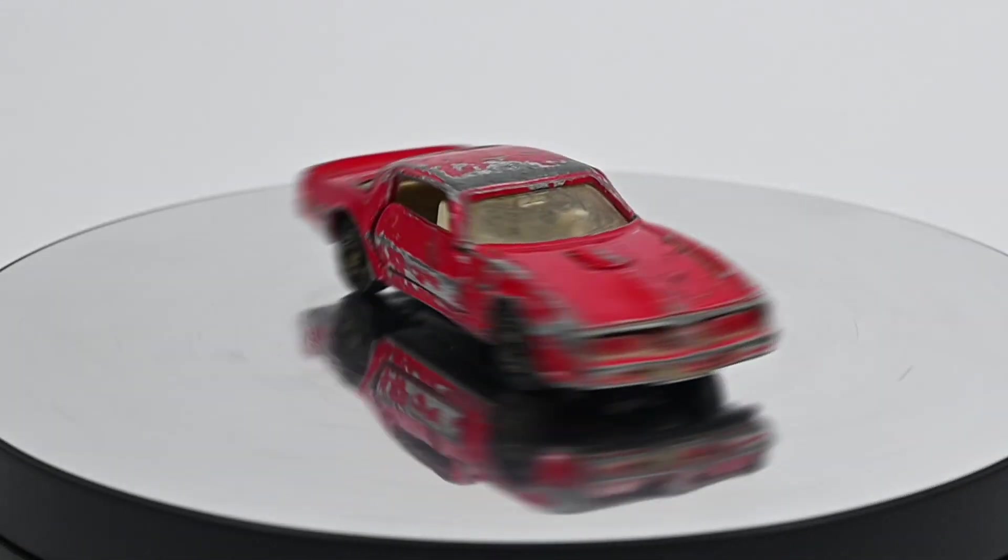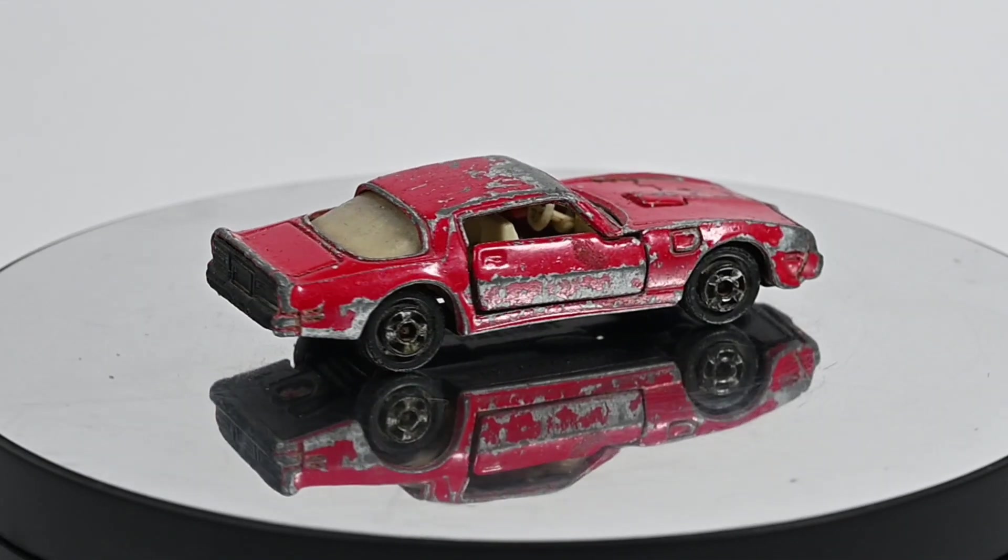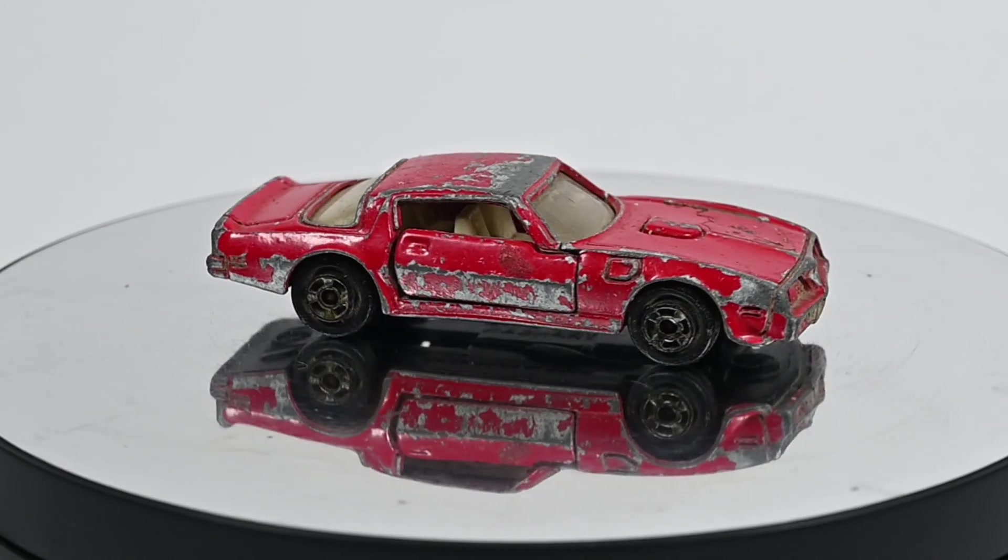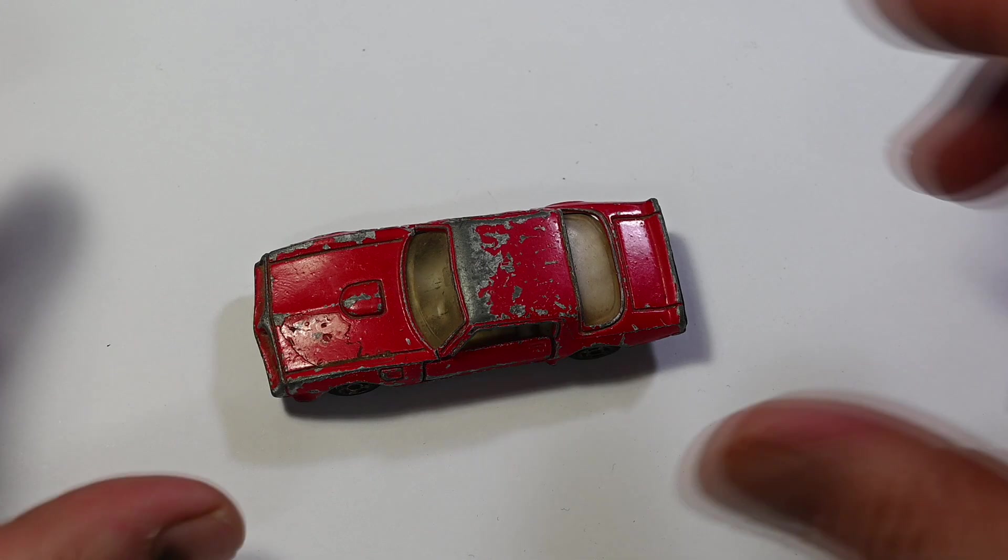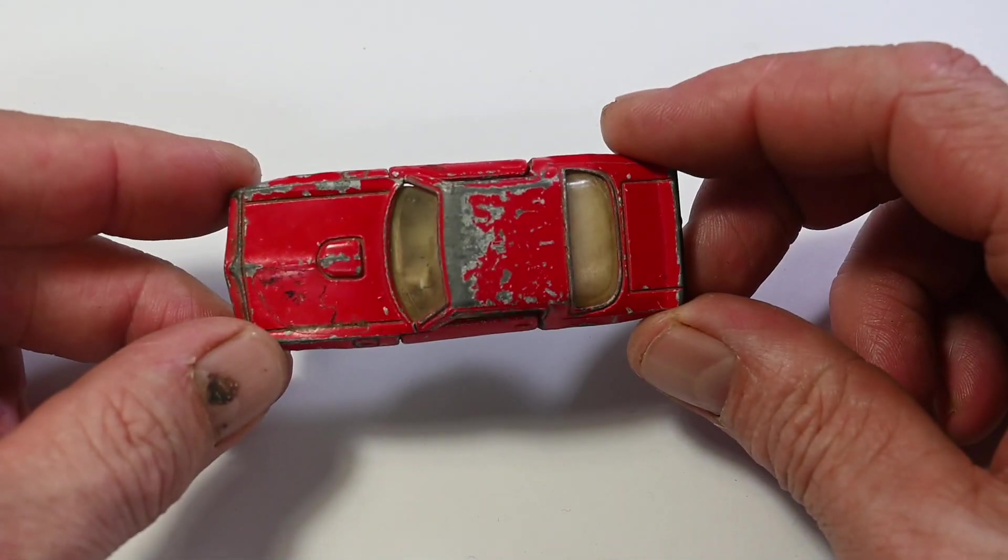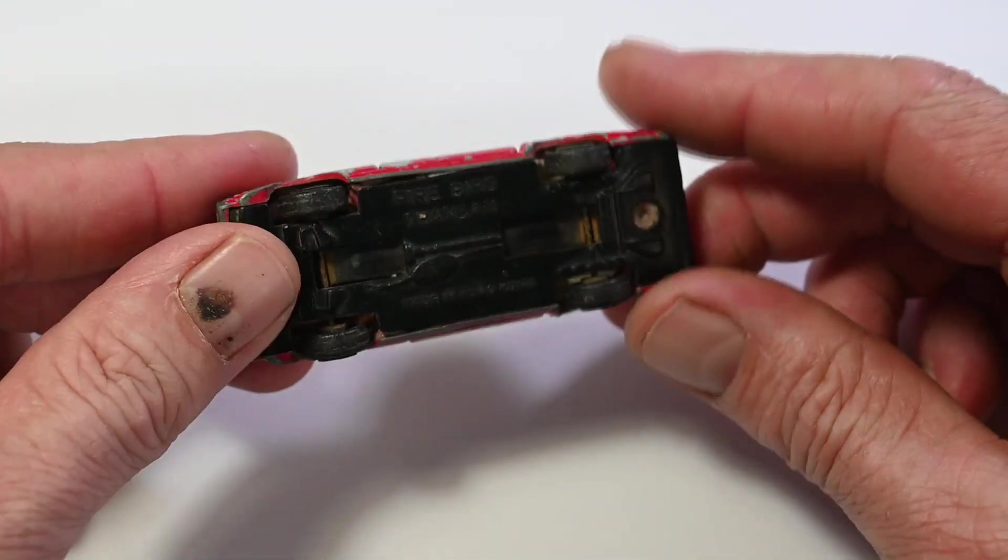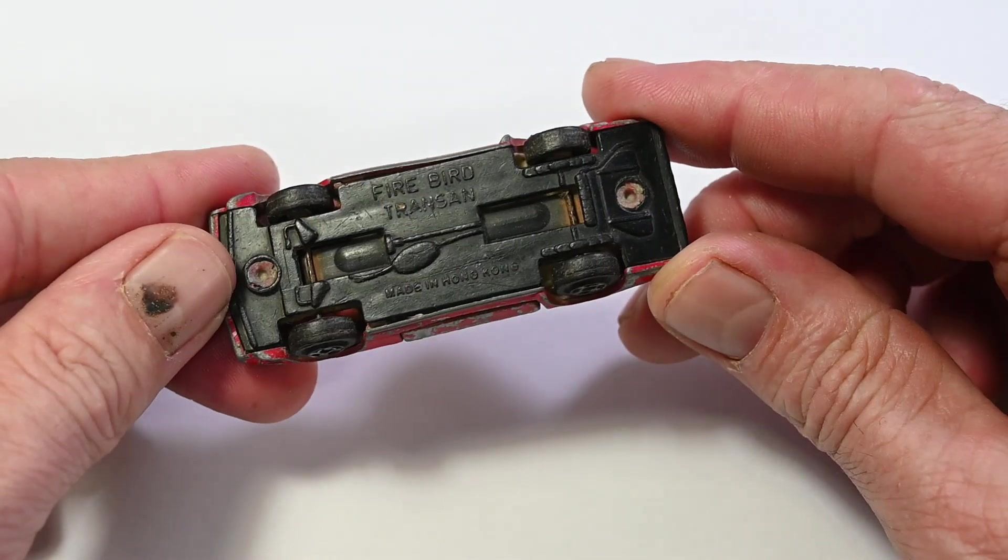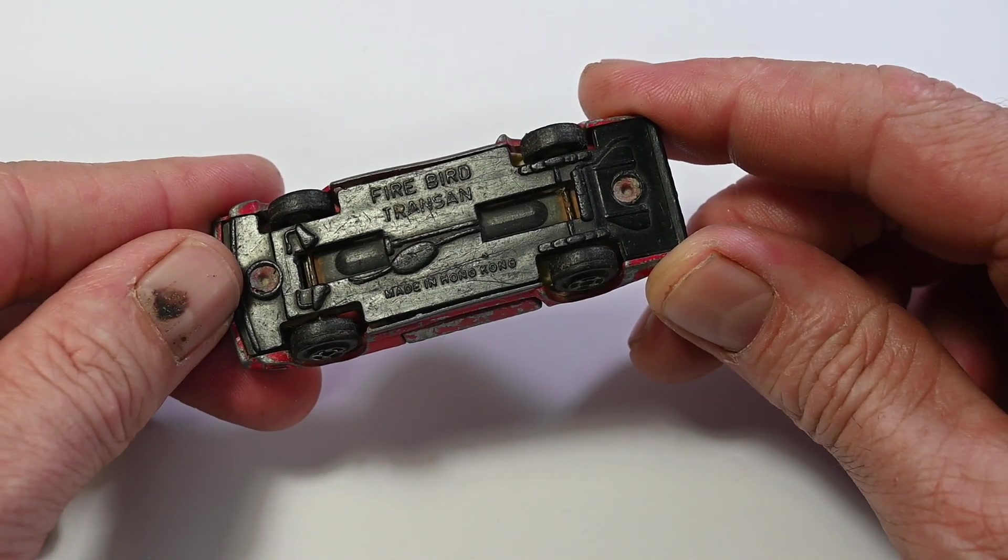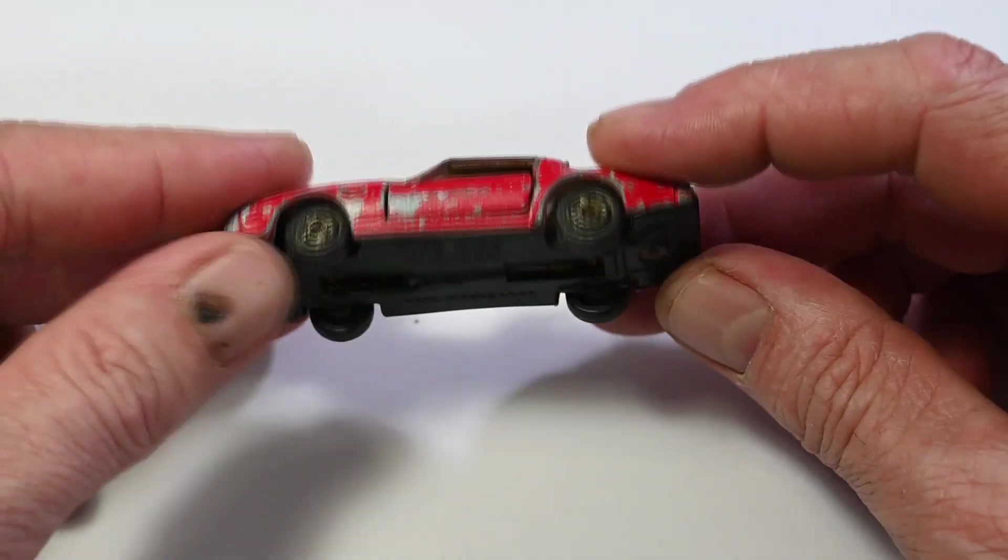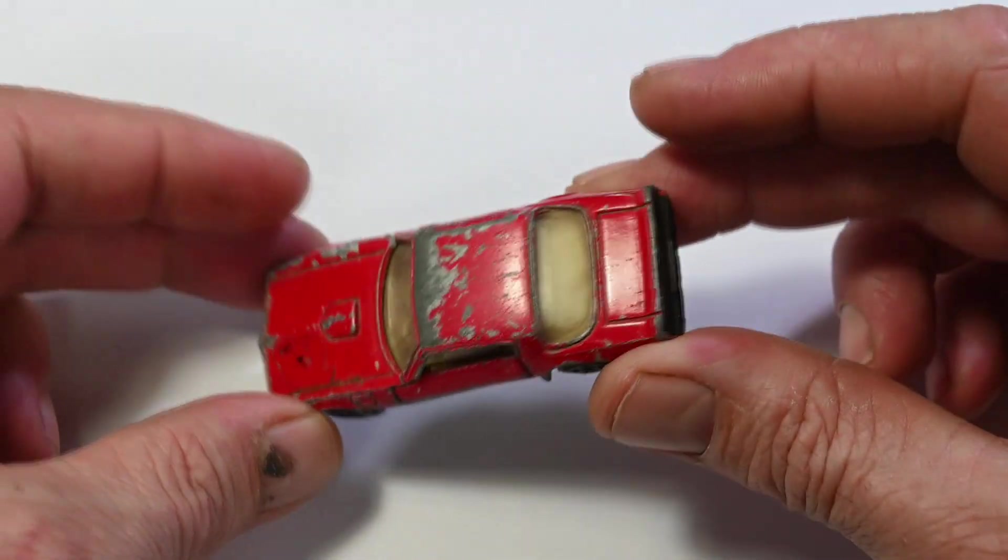It's actually got Transan written on the bottom of it with an N. I believe these were produced around 1979, 1980. There was this red one, I've got another black one. It's like the bandits one.